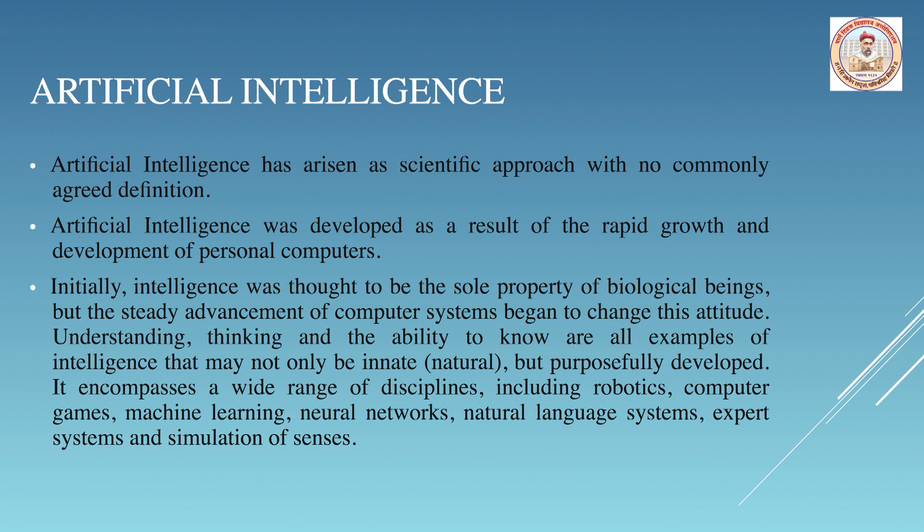Artificial intelligence has arisen as a scientific approach with no commonly agreed definition. It was developed as a result of rapid growth and development of personal computers. Initially, intelligence was thought to be the sole property of biological beings, but the steady advancement of computer systems began to change this attitude. Understanding, thinking, the ability to know and the ability to implement are examples of intelligence that may not be innate but purposefully developed in a machine.